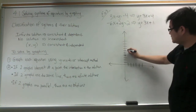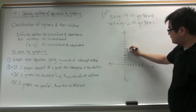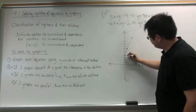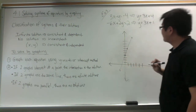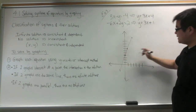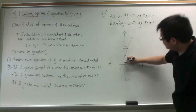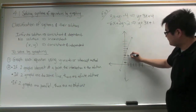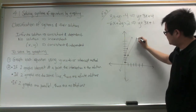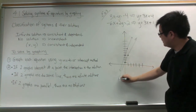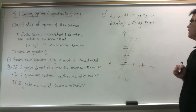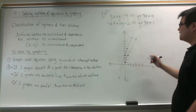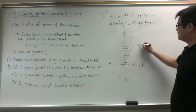We go up 3 and over 1 for the slope. For the next one, the y-intercept is 1, so we graph at 1. Then, we go up 3 and over 1. For this particular system of equations, these lines are parallel, so they will never intersect. There is no solution for this one.